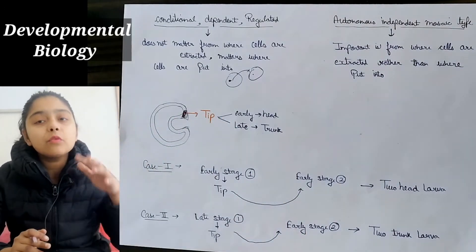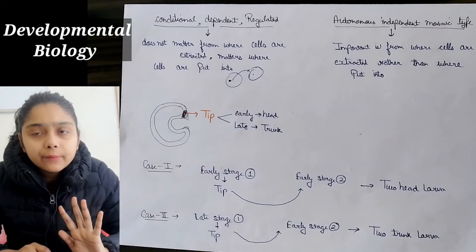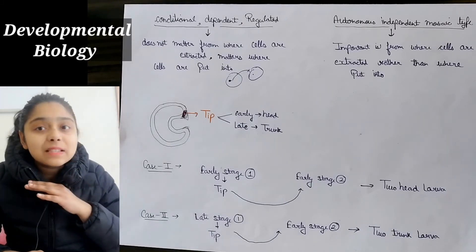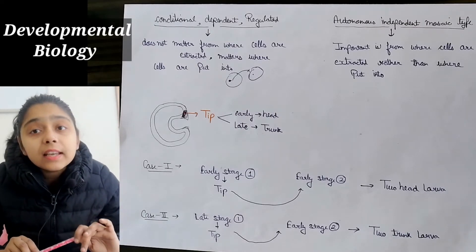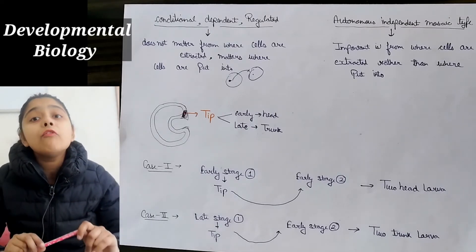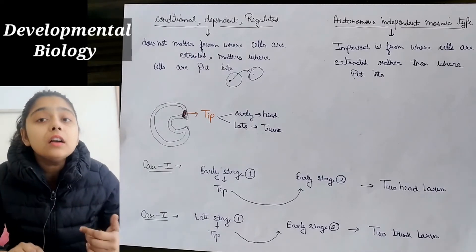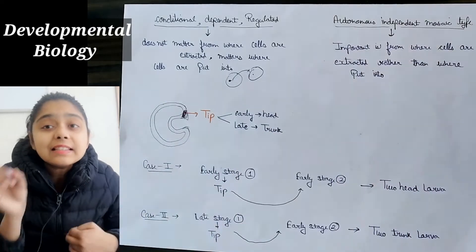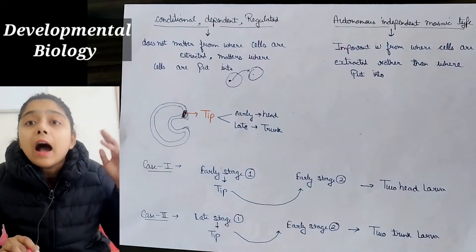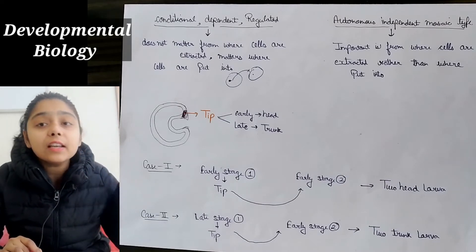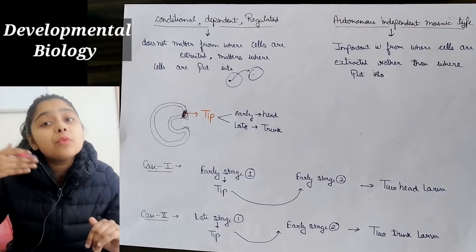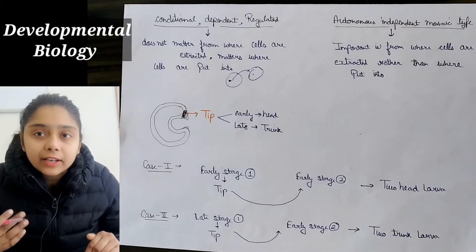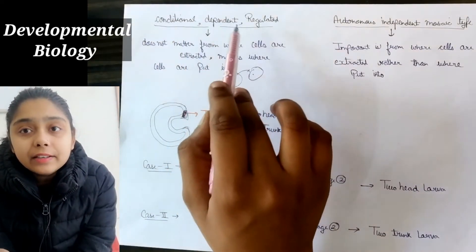In CDR cells, a cell that was on the dorsal side, if placed on the ventral side, will behave like a ventral cell. The cell itself is not specified. It doesn't matter where the cells are extracted from; what matters is where they are placed. They will behave according to their new environment. These are called Conditional Dependent Regulated type cells.